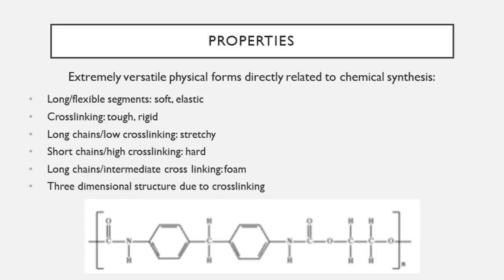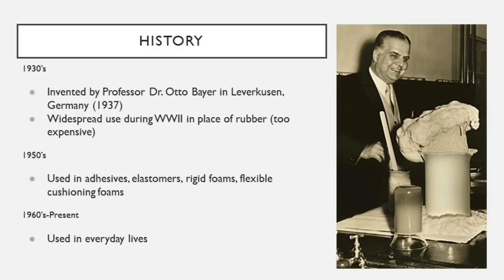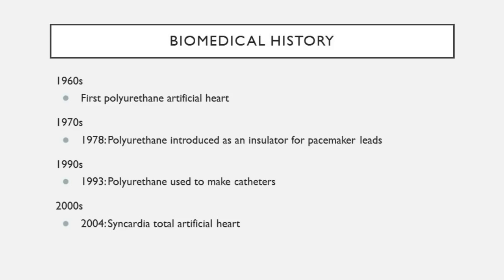Polyurethanes were first synthesized in 1937 by German chemist Otto Bayer in Leverkusen, Germany — the founder of the chemical company of the same name, and whose factory workers started the soccer team Bayer Leverkusen. Polyurethanes gained widespread use during World War II when rubber was scarce, later finding use in adhesives, elastomers, and foams. By the 1960s they entered everyday life, and in biomedical applications they were famously used in the first artificial heart in the 1960s.